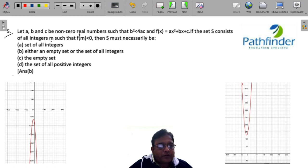Let A, B and C be non-zero real numbers such that B² is less than 4AC and f(x) is equal to Ax² plus Bx plus C. If the set S consists of all integers M such that f(M) is less than 0, then S must necessarily be.